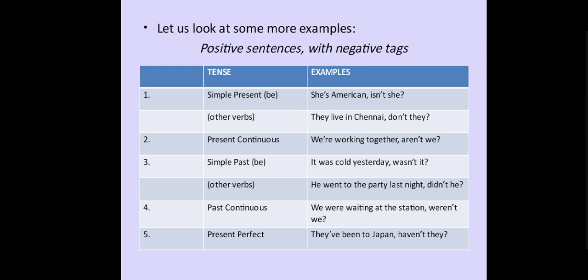Simple past tense with 'be' form — 'It was cold yesterday, wasn't it?' With other verbs (V2 form), we use 'did' — 'He went to the party last night, didn't he?' Past continuous tense — 'We were waiting at the station, weren't we?'